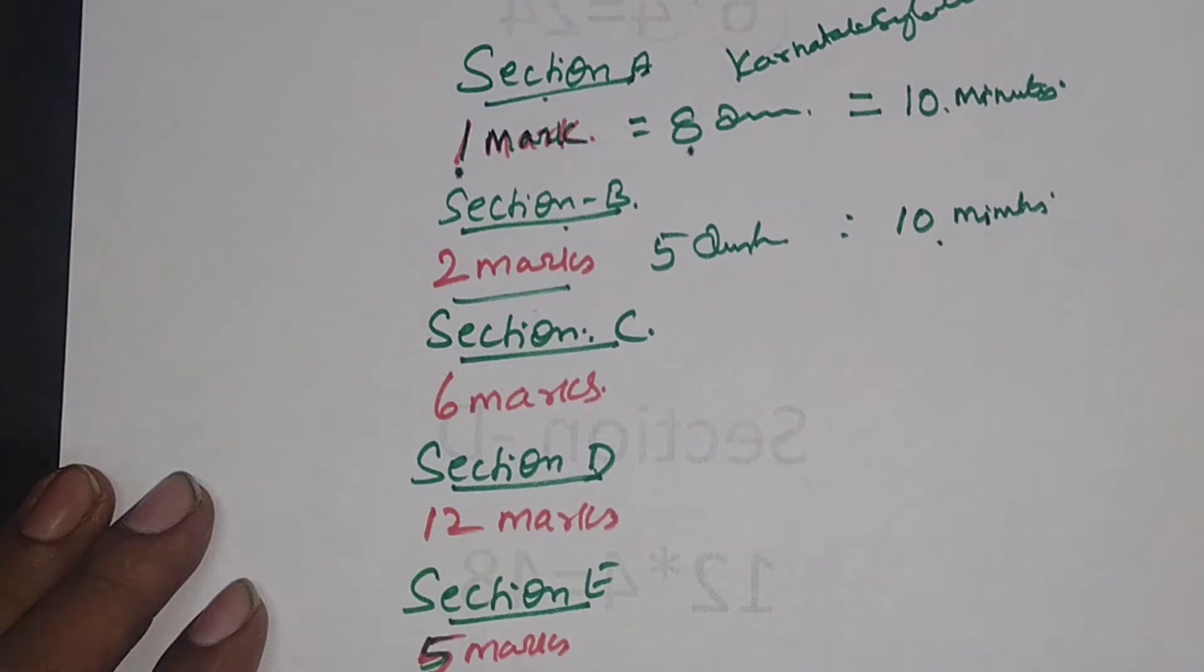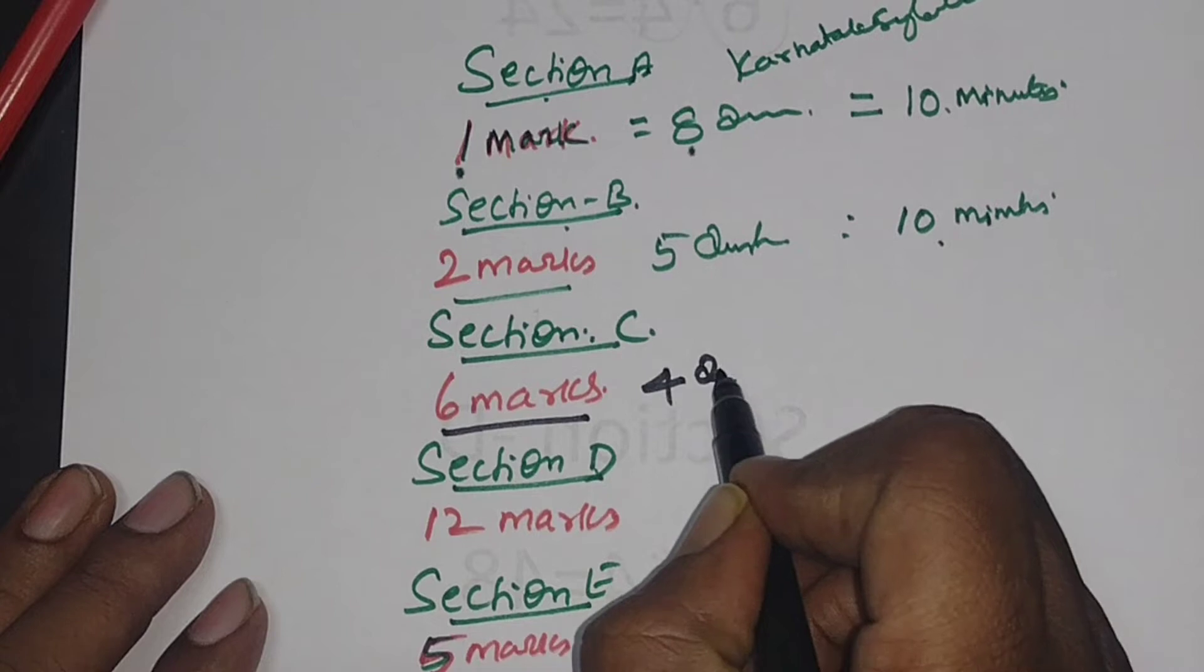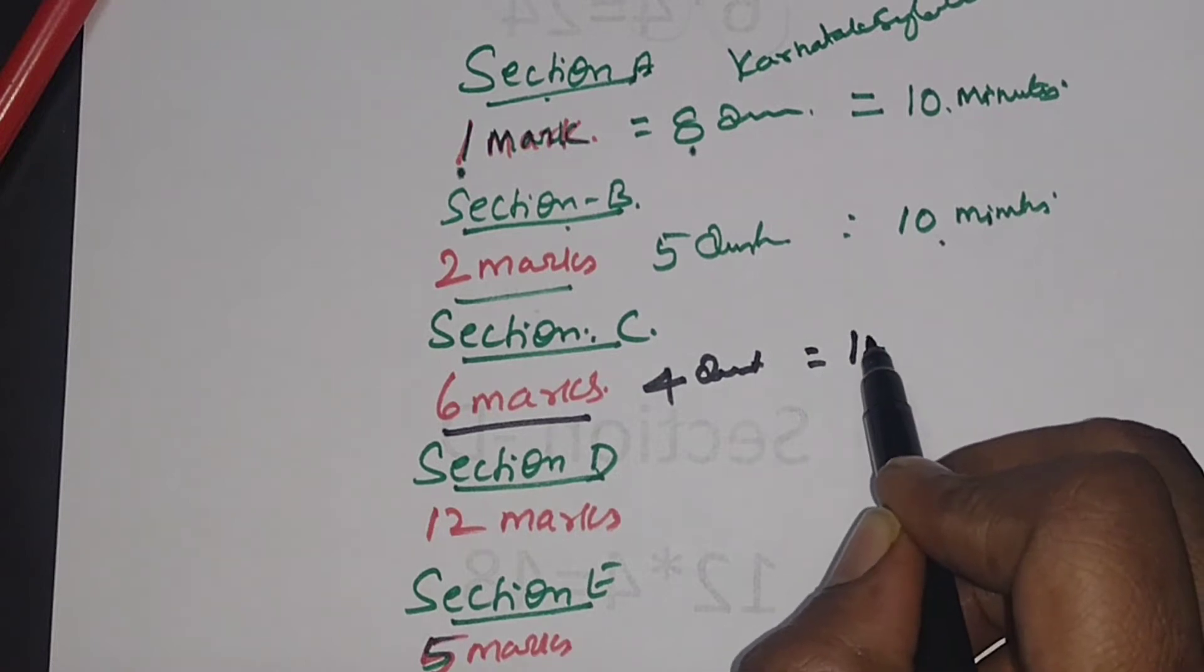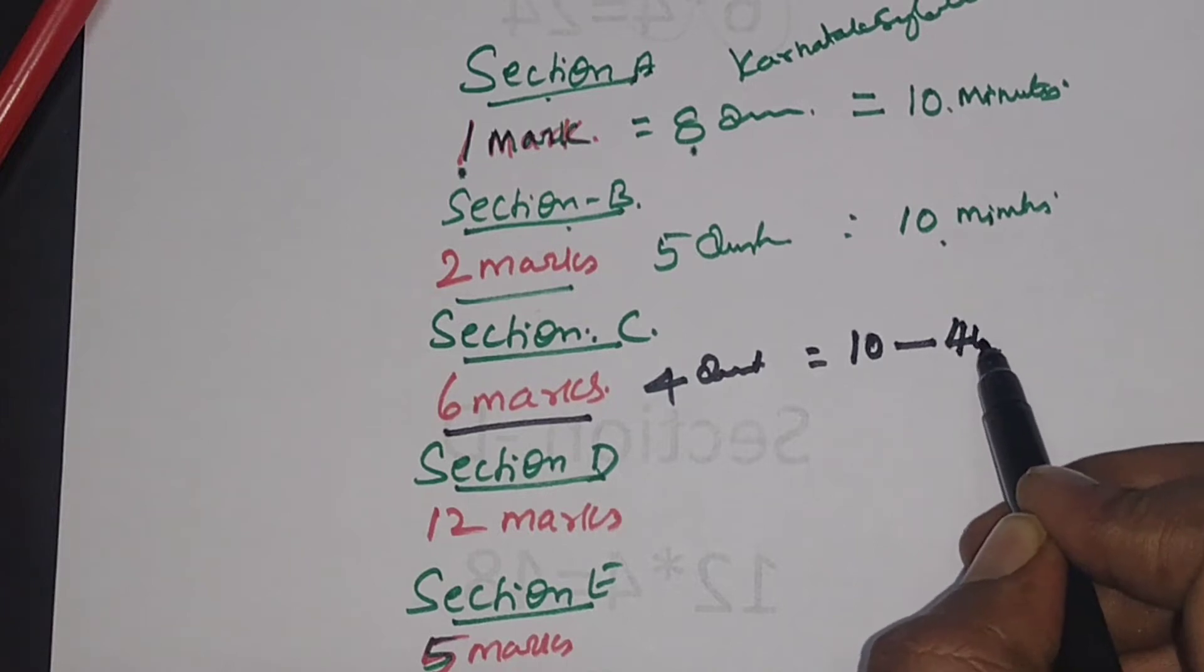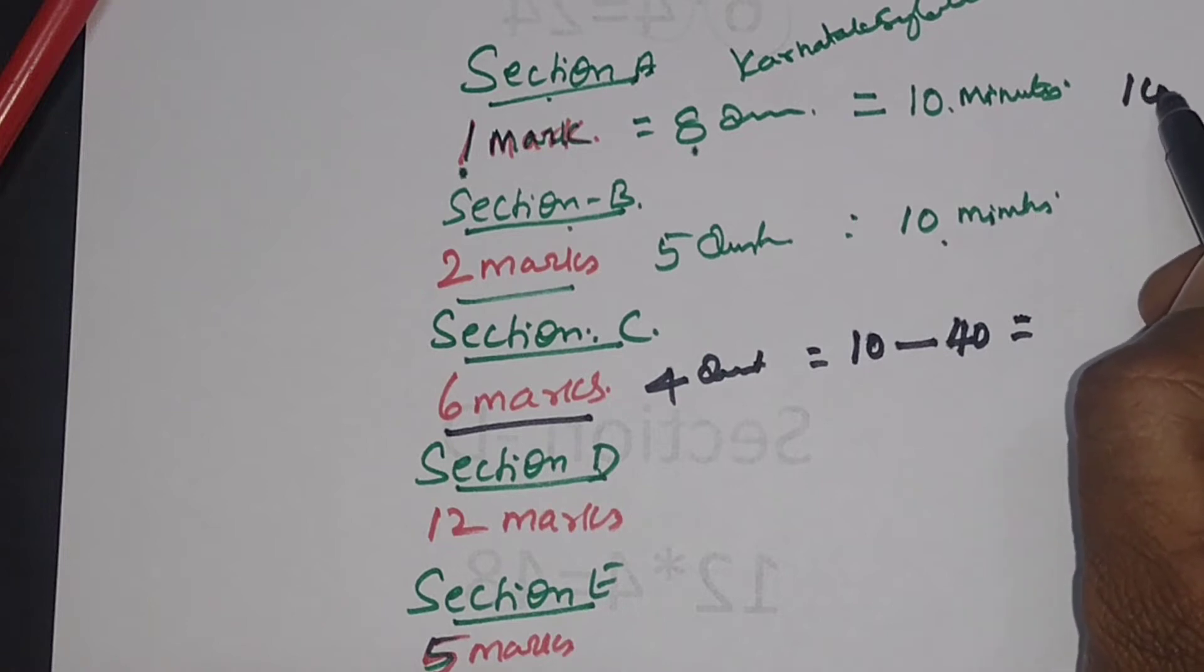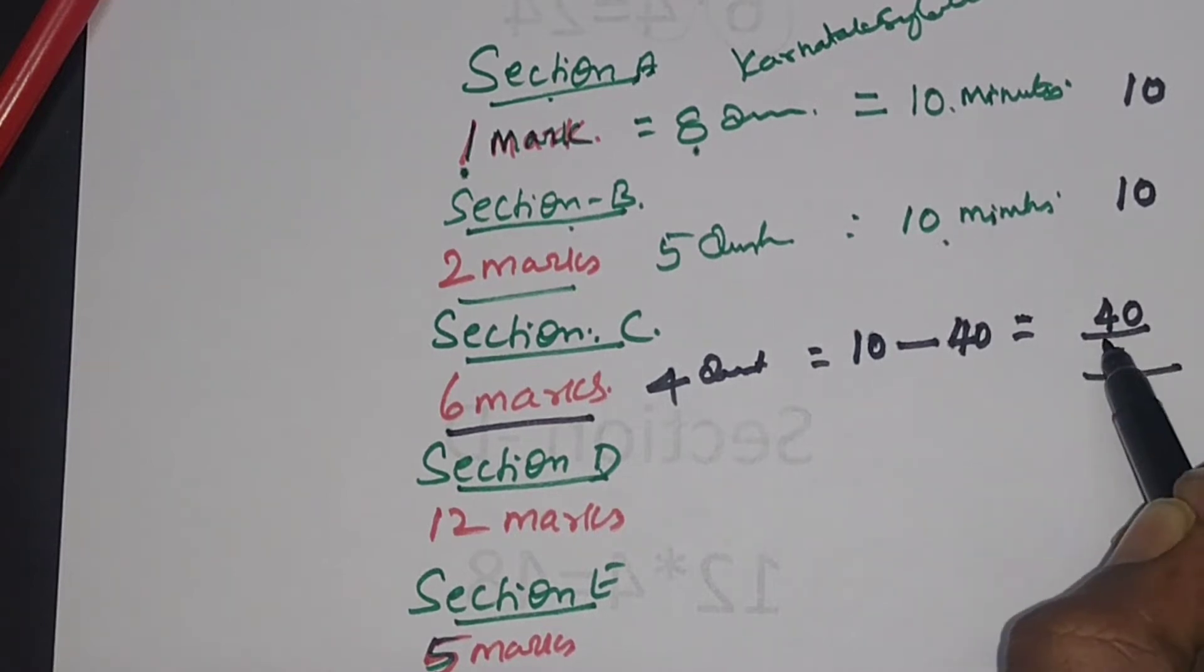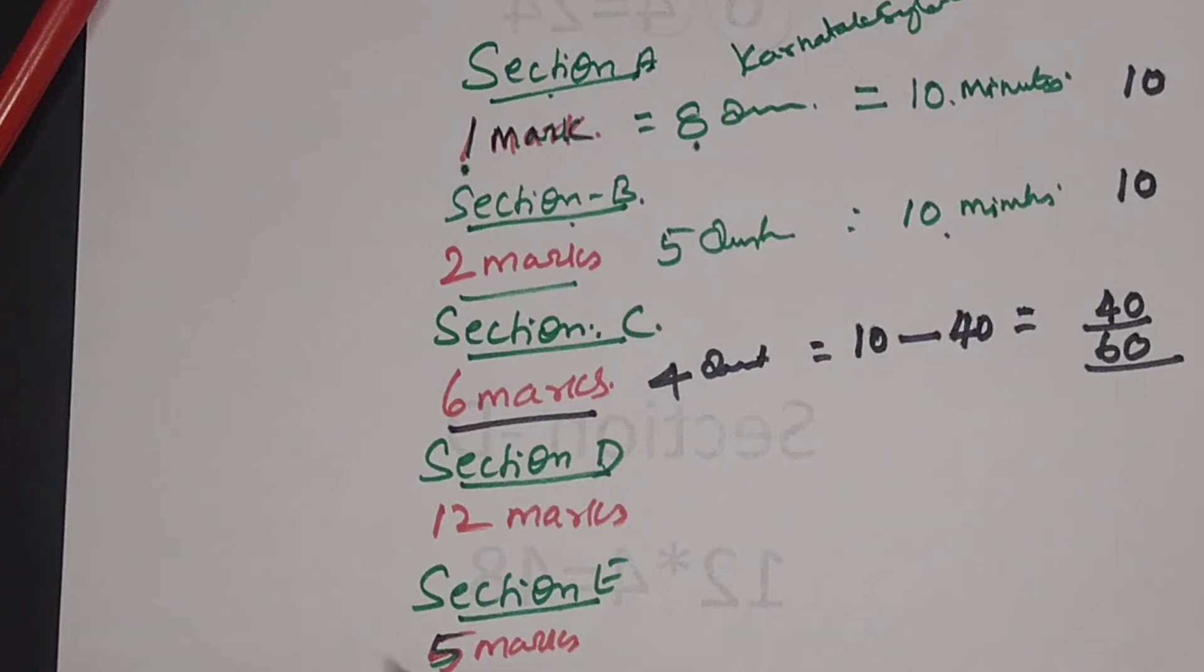Coming to section C, six questions, you need to attend four questions. Maximum if you take 10 minutes for one question, it will take 40 minutes. So 40 minutes means already 10 minutes for section A, 10 minutes for section B, 40 minutes for section C. This itself has covered 60 minutes out of 180 minutes.